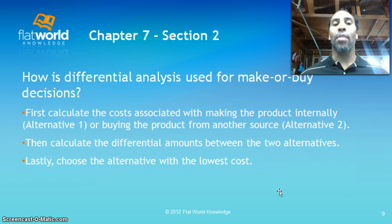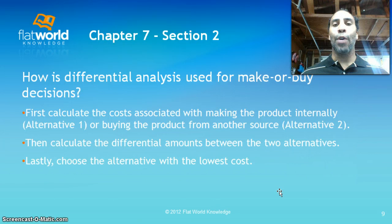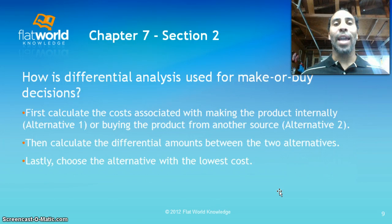How is differential analysis used for make or buy decisions? First, calculate the cost associated with making the product internally. Then calculate the cost of buying the product from another source. Then calculate the differential amounts between the two alternatives to get your real answer, because some costs will be retained and you may not be able to alleviate all costs. Lastly, choose the alternative with the lowest cost.